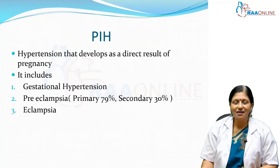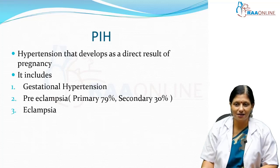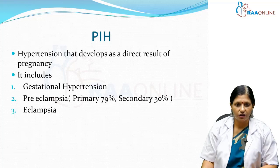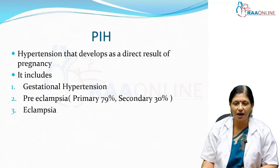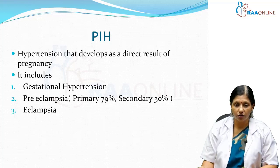Pregnancy-induced hypertension is a hypertension that develops as a direct result of pregnancy. Pregnancy-induced hypertension can include gestational hypertension — that is, just a rise in blood pressure without proteinuria. It can include pre-eclampsia, which can be primary or secondary, and it can include eclampsia.